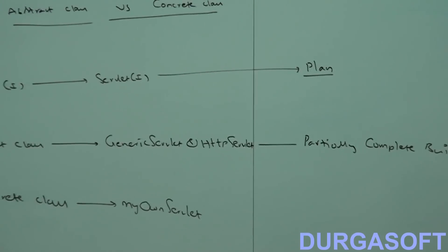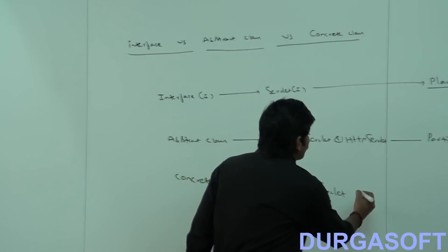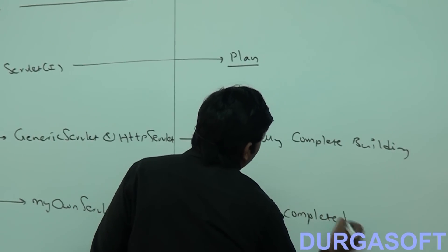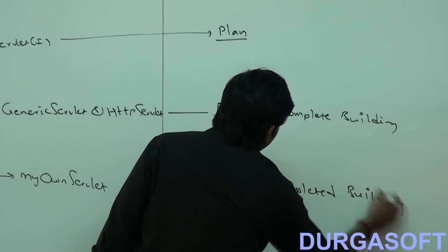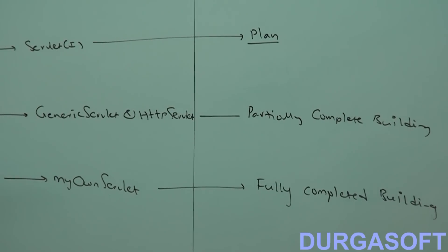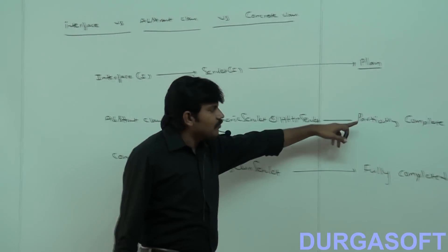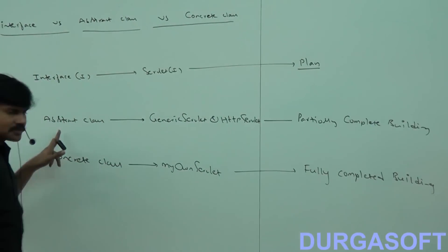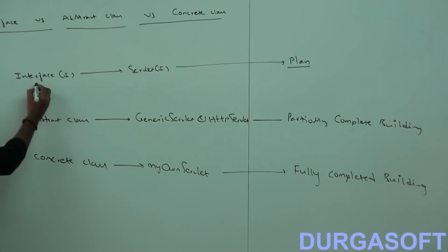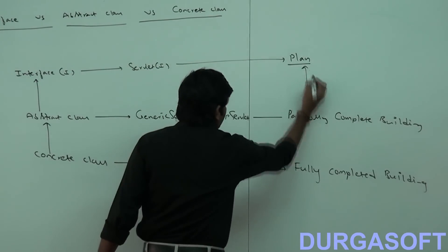When the thousand-floor building is fully constructed and ready to use, that is nothing but a concrete class. A fully completed building is nothing but a concrete class. So plan = interface concept, just a requirement specification. Partially completed building = partial implementation, just like abstract class. Fully completed building is nothing but concrete class. I hope you can understand when we should go for interface concept and when we should go for abstract class concept.